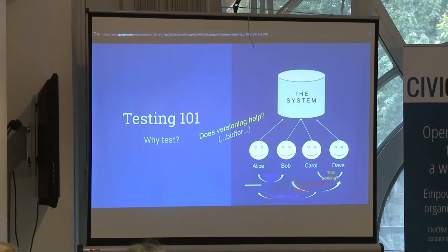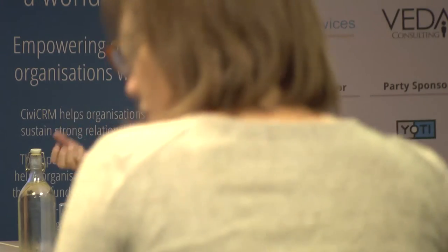This is when testing becomes pretty helpful. Before talking more about testing, I want to make a note about versioning, because versioning is another process that mitigates this. In theory, Alice can be using version one and Bob can be using version two. Versioning essentially acts as a buffer — it gives you a time delay between when Alice and Bob have their conflict. So when Alice does the upgrade to version two, that's when you get problems. The material on testing is still relevant even when you have versioning.